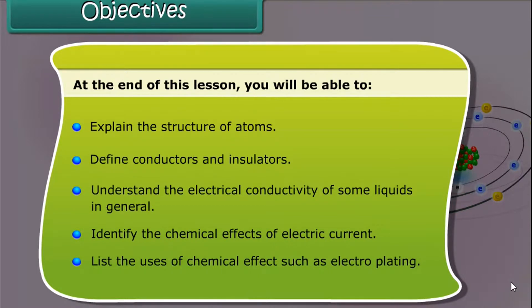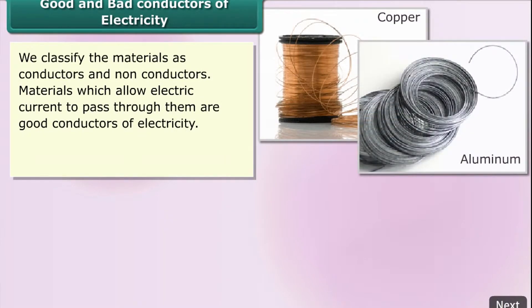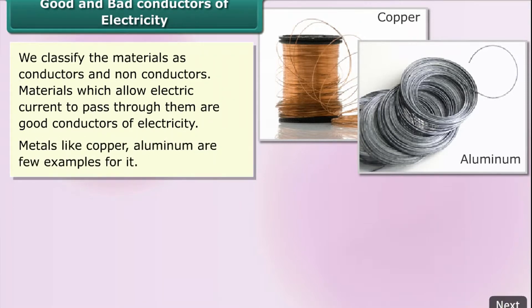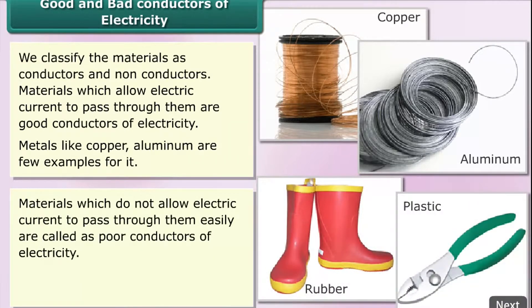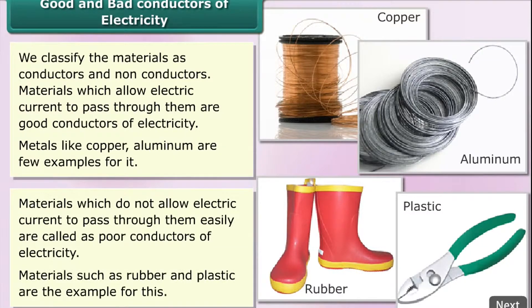We classify materials as conductors and non-conductors. Materials which allow electric current to pass through them are good conductors of electricity — metals like copper and aluminium are a few examples. Materials which do not allow electric current to pass through them easily are called poor conductors of electricity; materials such as rubber and plastic are examples of this.